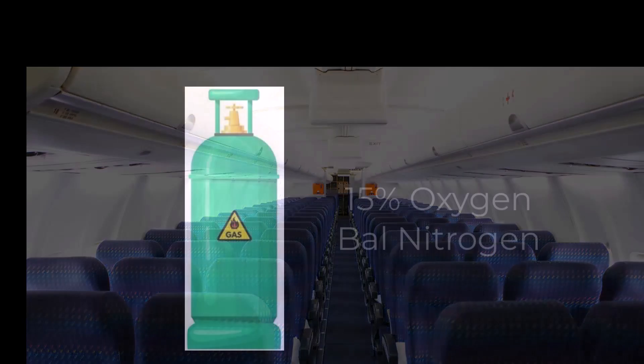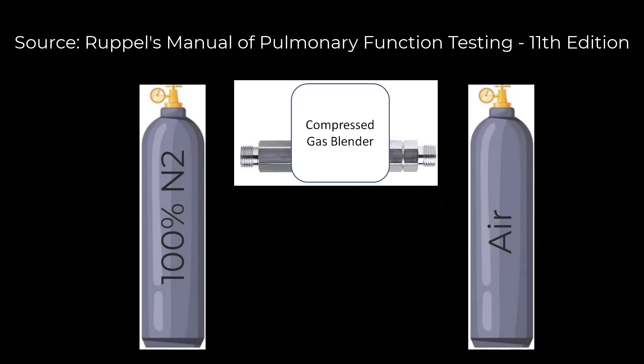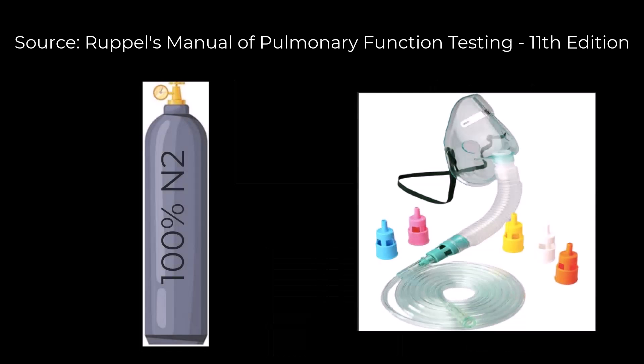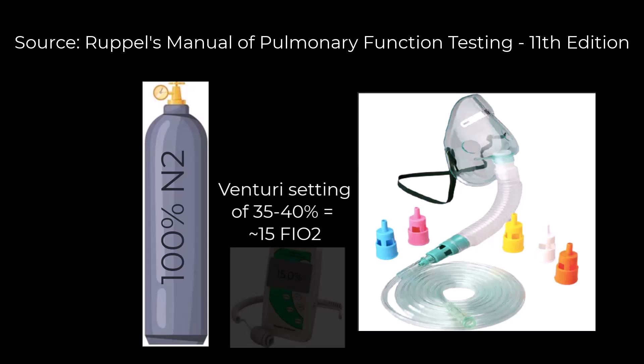To simulate the maximum allowable aircraft cabin pressure of approximately 8,000 feet, the inhaled FiO2 will need to be 15%. This is obtained by having a compressed gas tank with 15% oxygen and the balance nitrogen. You can also use a blender with two compressed gas tanks, blending a tank of 100% nitrogen and another with compressed air, then monitoring the FiO2 with an oxygen analyzer. A Venturi mask can also be used if driven by a 100% nitrogen source.